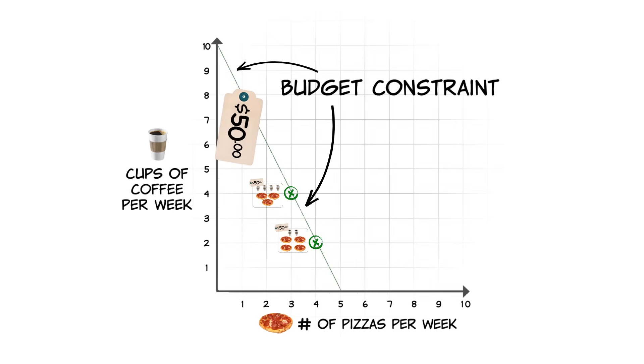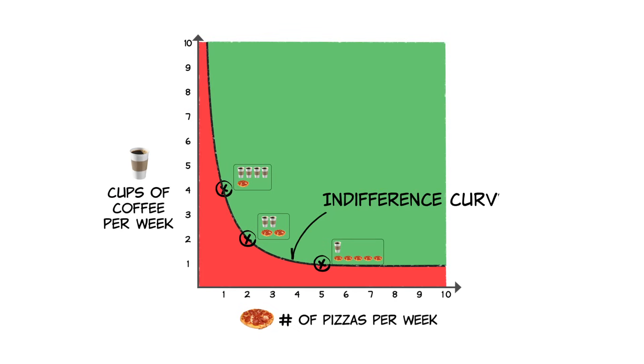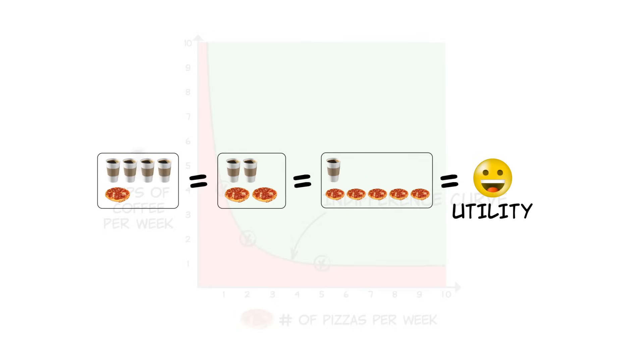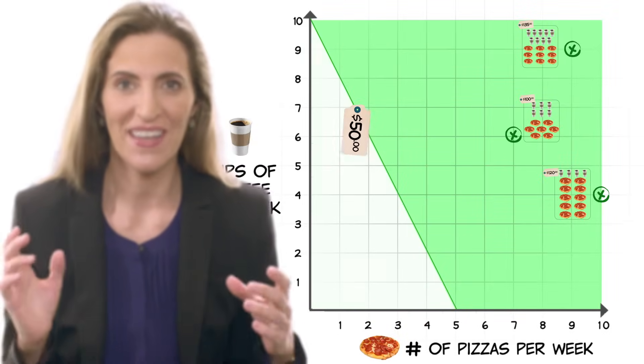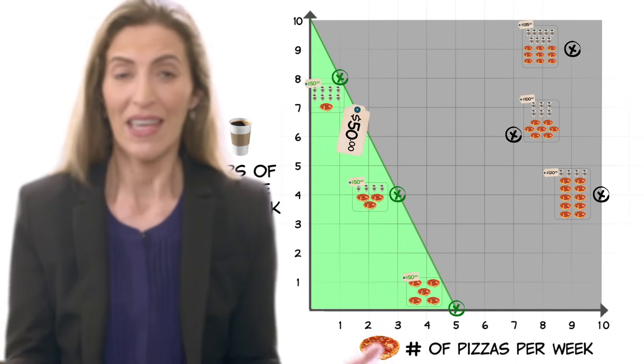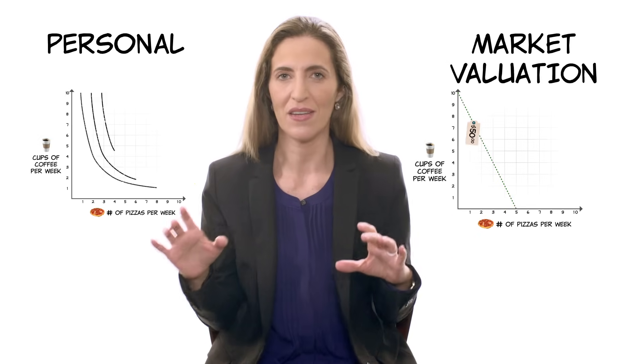Remember, your budget constraint represents how the market values goods and what you can afford given your income. Your indifference curves represent how you value goods based on your personal preferences. We all wish we could have more of everything, but the reality is that we have limited resources and the prices of things force us to make trade-offs. We want to get the best bang for our buck.